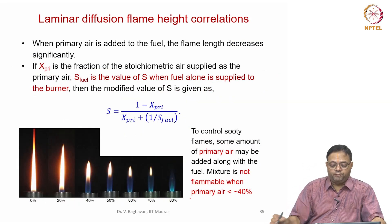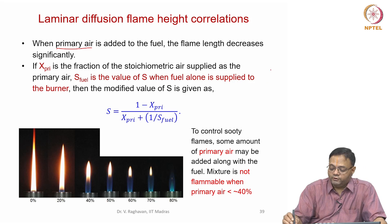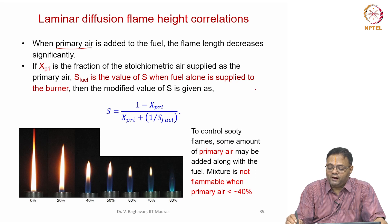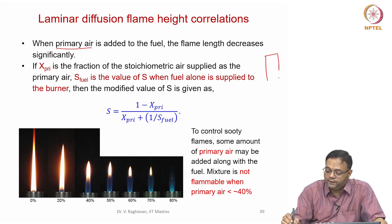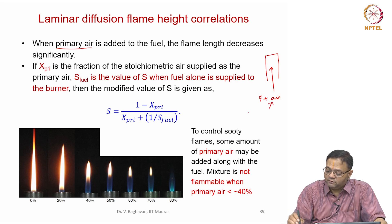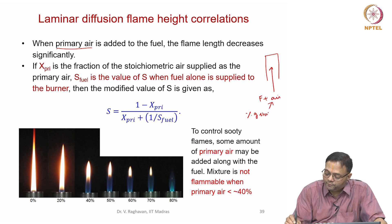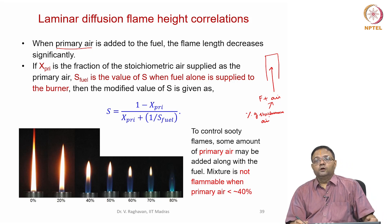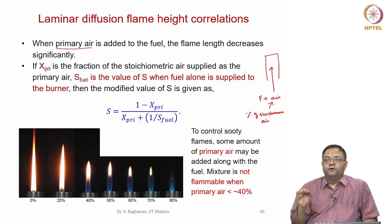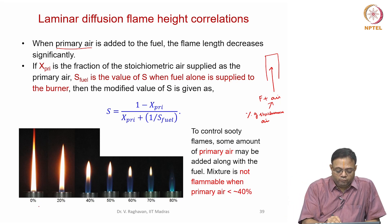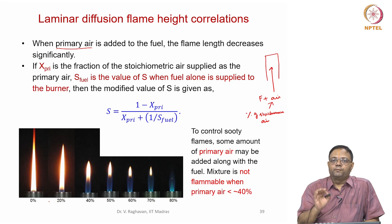Now let us talk about primary air. The primary air is specified as a percentage of the stoichiometric air. For example, if stoichiometric air is 100 percent, you may inject only 10 percent or 20 percent.